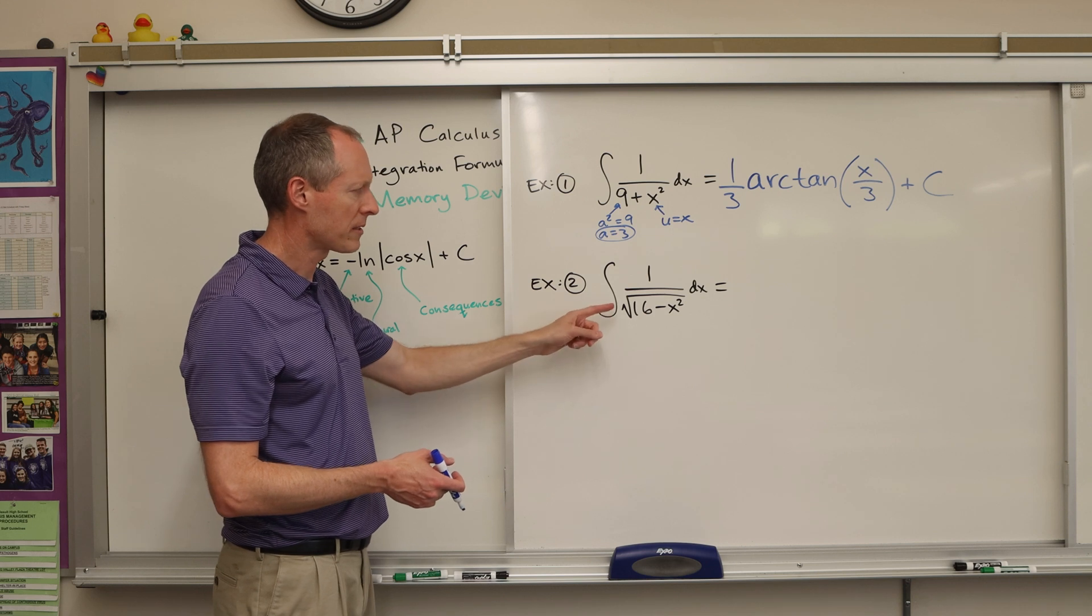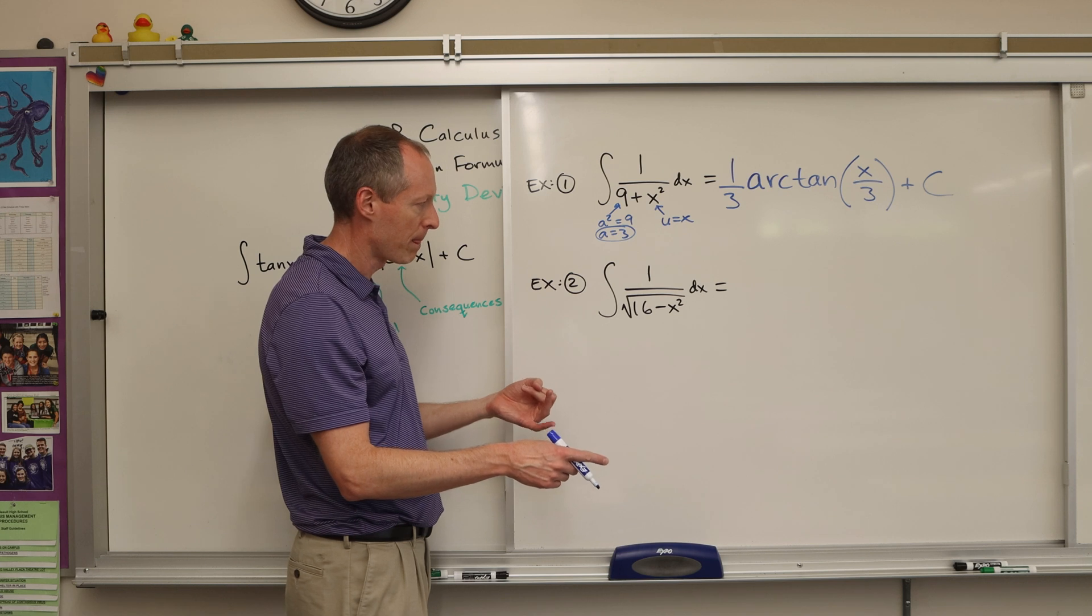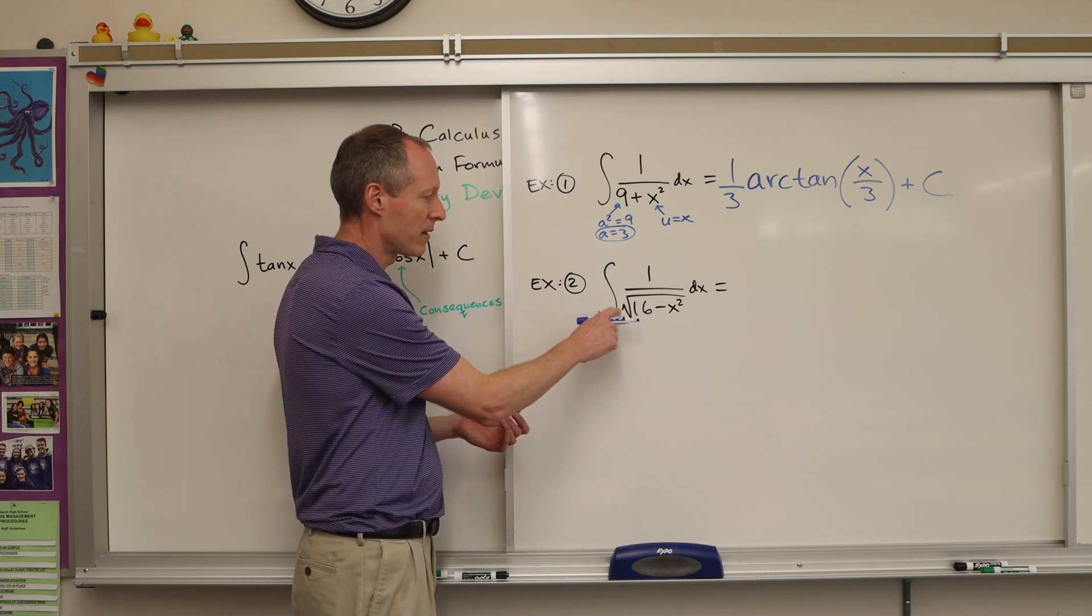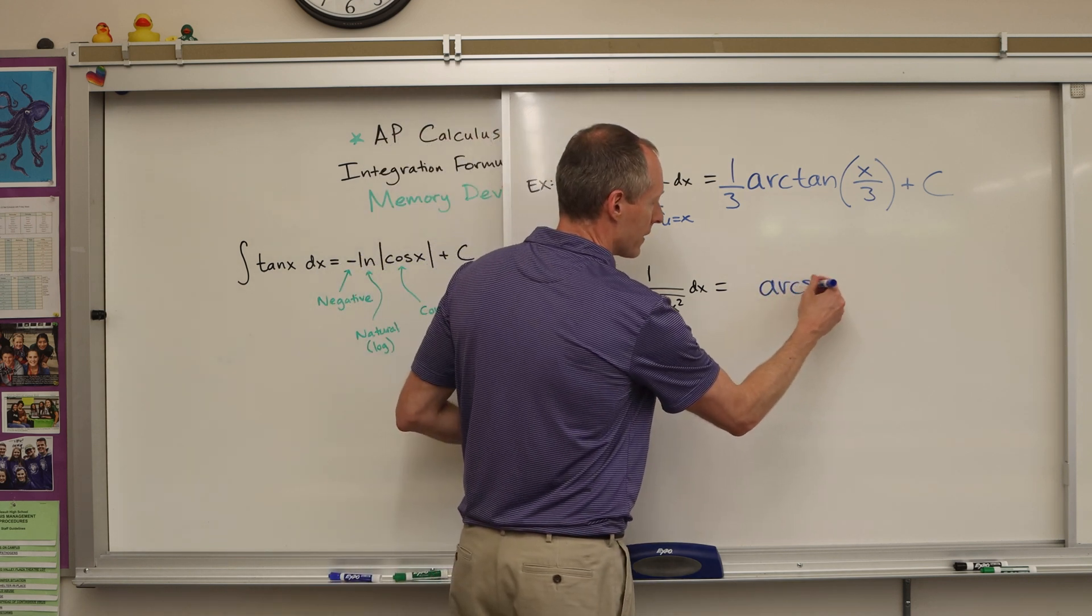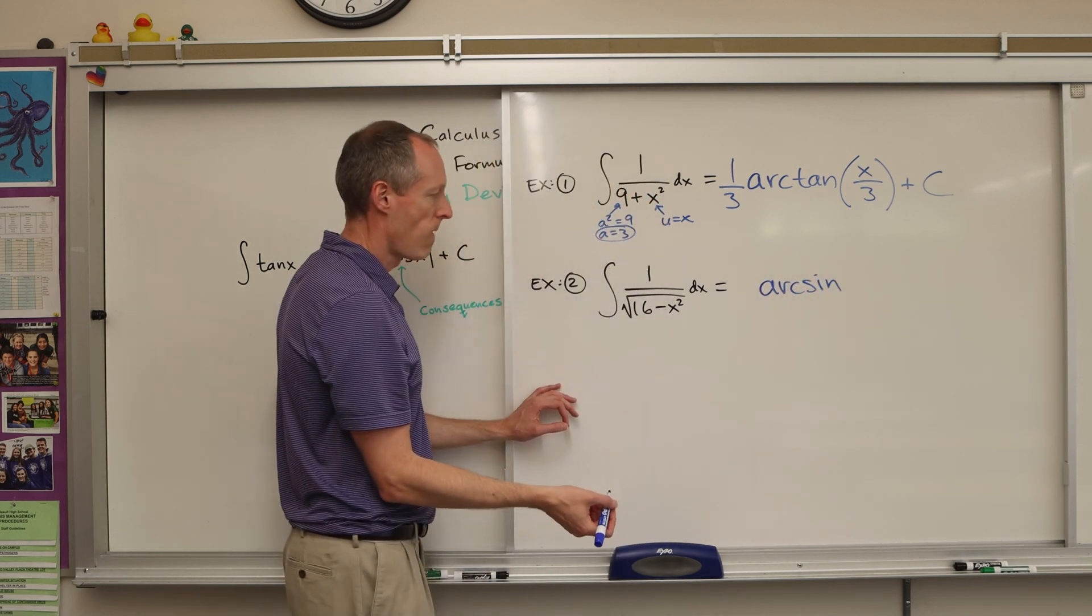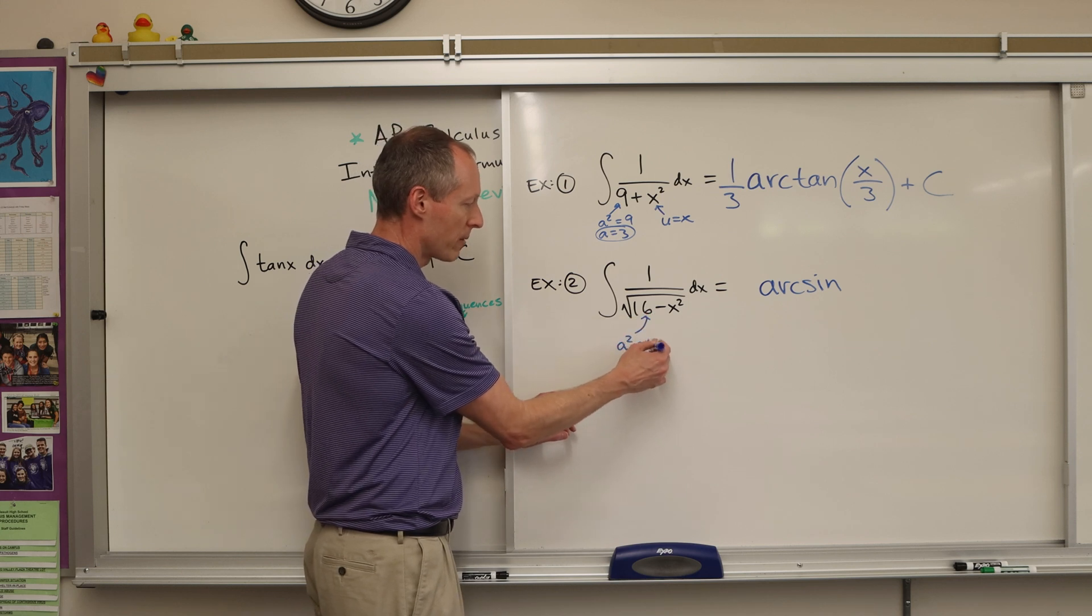Now let's do this one. This one has a square root, so we know it's not arc tangent. So it's got to be either arc sine or arc secant. Arc secant had that extra variable out front, so it's not that. So it's got to be arc sine. So we're thinking, okay, it's arc sine, and then the number, the constant part, that's a squared.